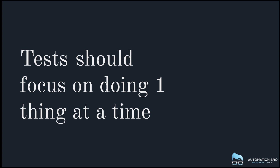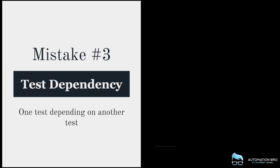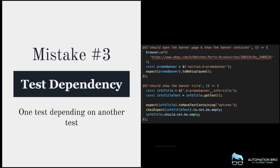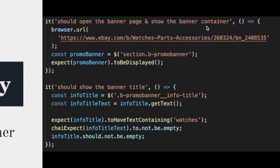Mistake number three is test dependency — meaning one test depending on another test. While it's good for us to depend on our friends and family, it doesn't work the same way for automated tests. Here's an example: I'm opening the banner page and verifying the banner container, then in the next test I'm verifying the title of that same page. Test number two is dependent on test number one because test one opens the URL and test two relies on that URL already being open.